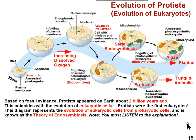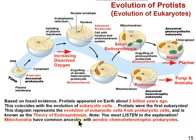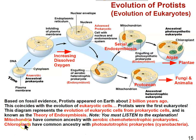So the result is that mitochondria have common ancestry with aerobic chemoheterotrophic prokaryotes, and chloroplasts have common ancestry with photoautotrophic prokaryotes similar to cyanobacteria.